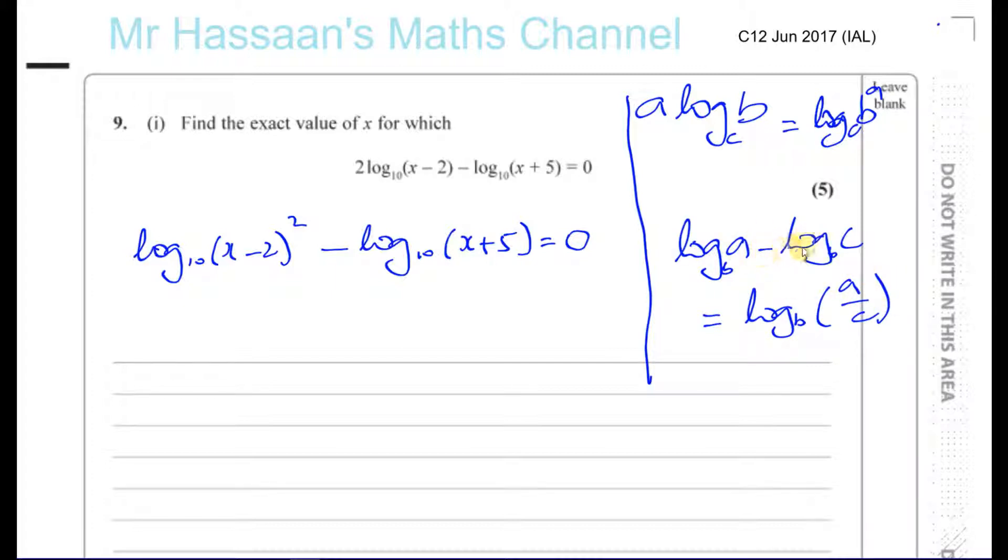It's kind of the reverse of index laws. So this is going to be log to the base 10 of (x minus 2) squared divided by (x plus 5) equals 0.